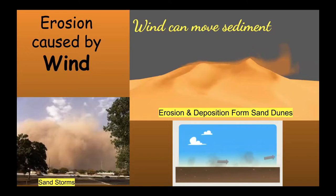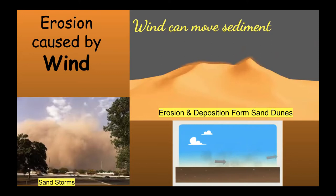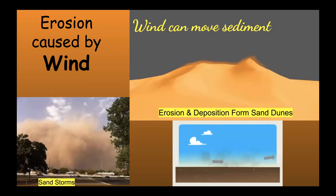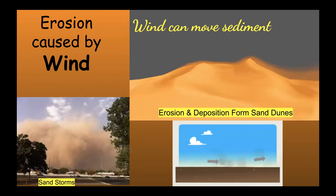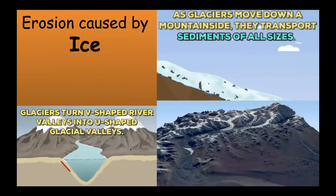Another good example of wind erosion is sandstorms. If you've been to West Texas near Amarillo or Lubbock, they often have sandstorms. Those storms kick up soil sediment and carry it to new locations. Erosion can also be caused by ice. Though we won't see much evidence of that in Texas, glaciers can move sediment and transport it to new locations.